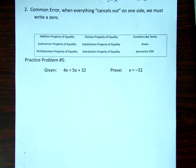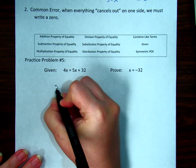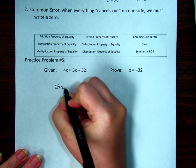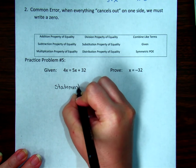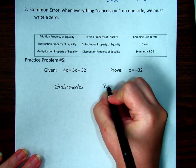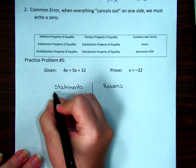I have 4X equals 5X plus 32, and I want to prove that X equals negative 32. So the first thing I'm going to do is start my proof with my table, my statements column on the left, and my reasons on the right. Always statements on the left and reasons on the right.